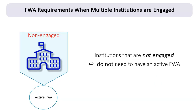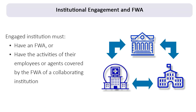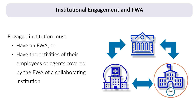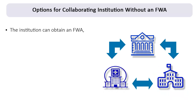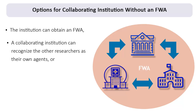Institutions that are not engaged do not have to have an active FWA. However, institutions that ARE engaged must either have their own FWA or their employees or agents who are conducting the research must be covered by the FWA of another institution involved in the multi-institutional project. An institution that does not already have an FWA can obtain one from OHRP. Otherwise, a collaborating institution that holds an FWA could recognize as its agents those investigators that are employed at the institution without an FWA. In this way, the investigators would be considered agents of this FWA-holding collaborating institution for the purposes of this specific study.